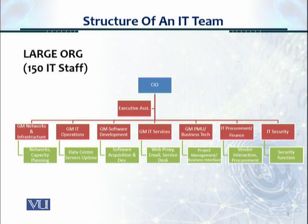In a large organization, all seven reporting functions to the CIO would be present: the GM networks, the GM IT operations, the GM software development, GM IT services, the project management unit, the business technology function, procurement and finance, and information security. For around 150 to 200 IT staff, this is the structure we will find.